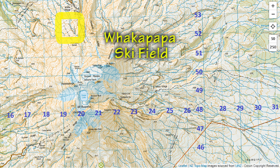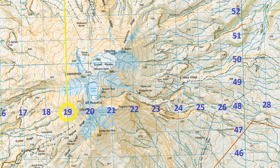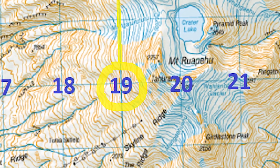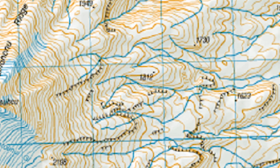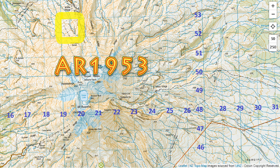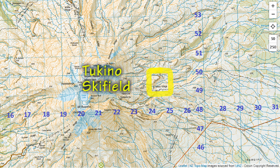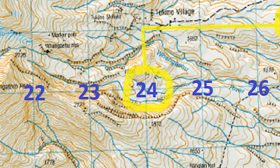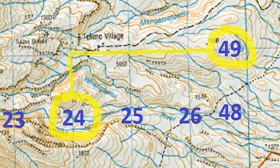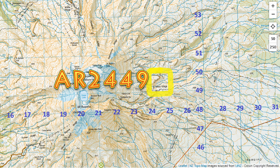Now let's find the area reference for the other two ski fields. For the Whakapapa ski field, the eastings are 19 and the northings are 53, giving us an area reference of 1953. For the Tukino ski field, the eastings are 24 and the northings are 49, giving us an area reference of 2449.